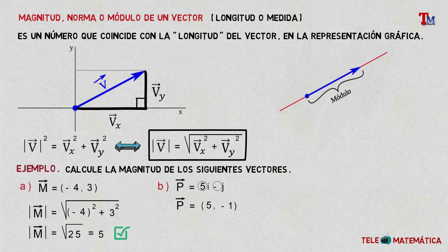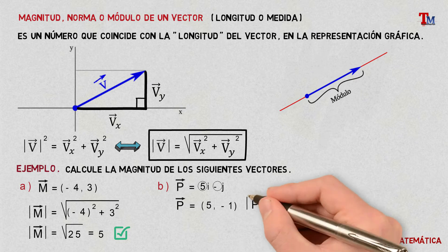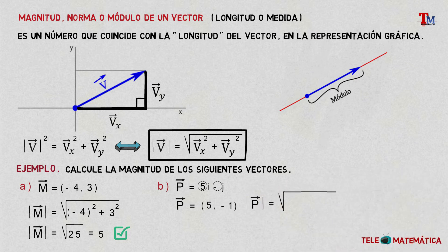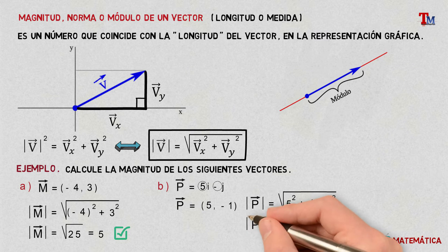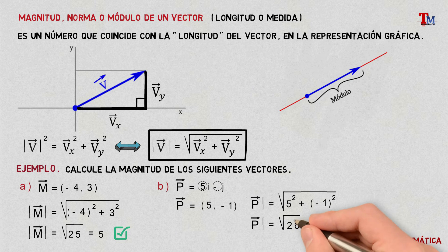Then, from here, we can then use the formula, and we would have that the length of the vector P will be equal to the square root of 5 squared plus minus 1 squared. Now, solving the power and the addition, we would have that the length of the vector P will be equal to the square root of 26, or what is the same, approximately 5.1. Very good.